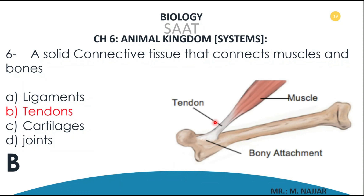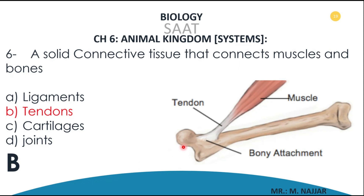The connective tissue that connects muscle to bone is the tendon. Bone to bone is connected by ligaments. A joint is the point at which one bone meets another bone. So: tendons connect muscle to bone, ligaments connect bone to bone, and the point at which bones meet is known as a joint.